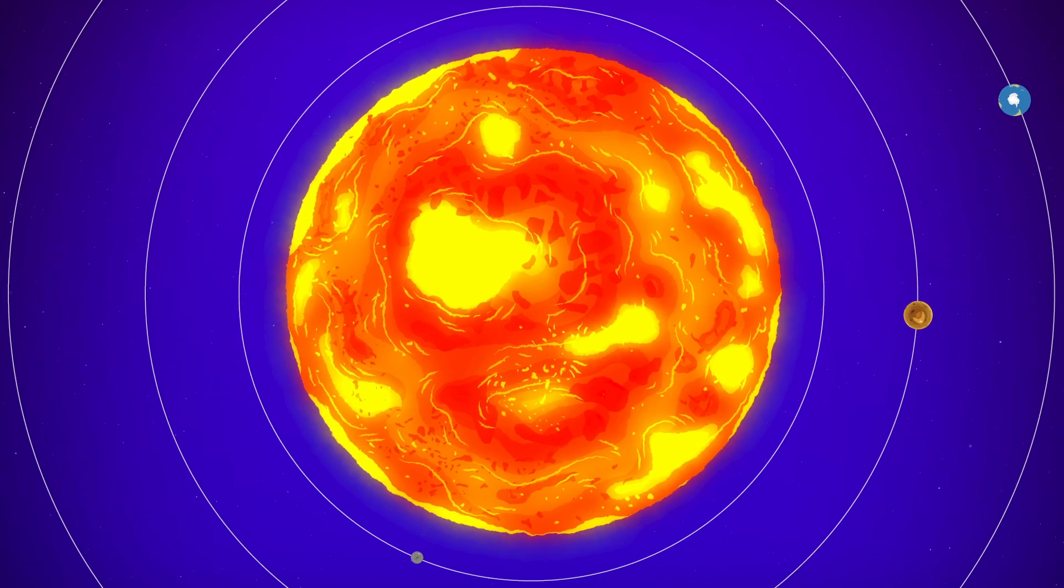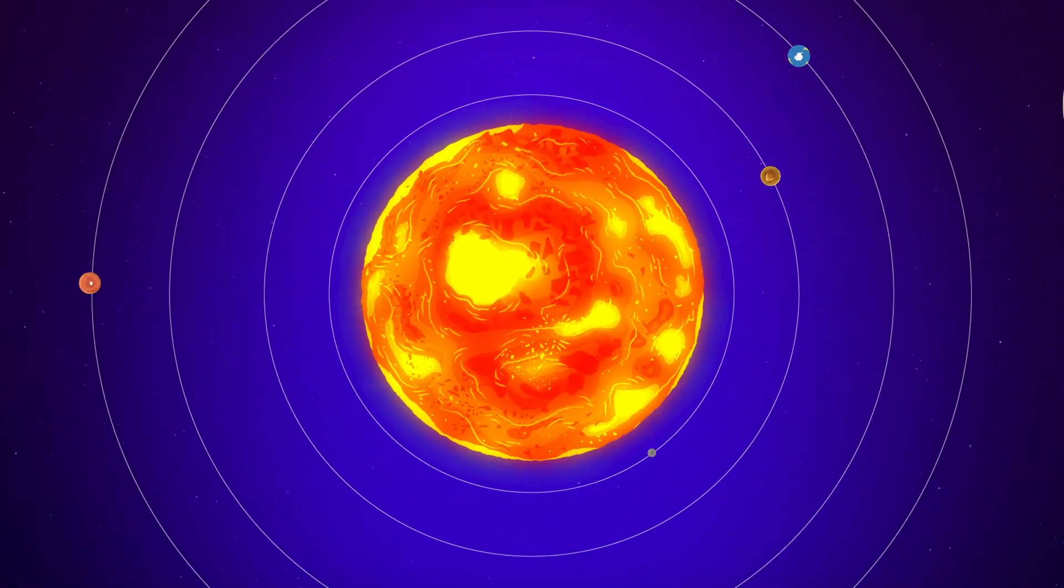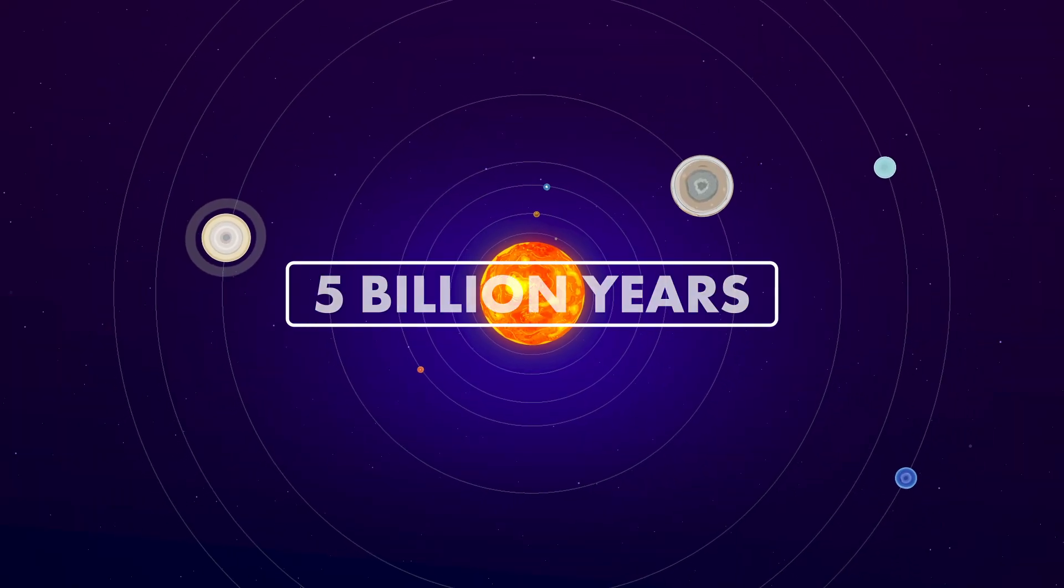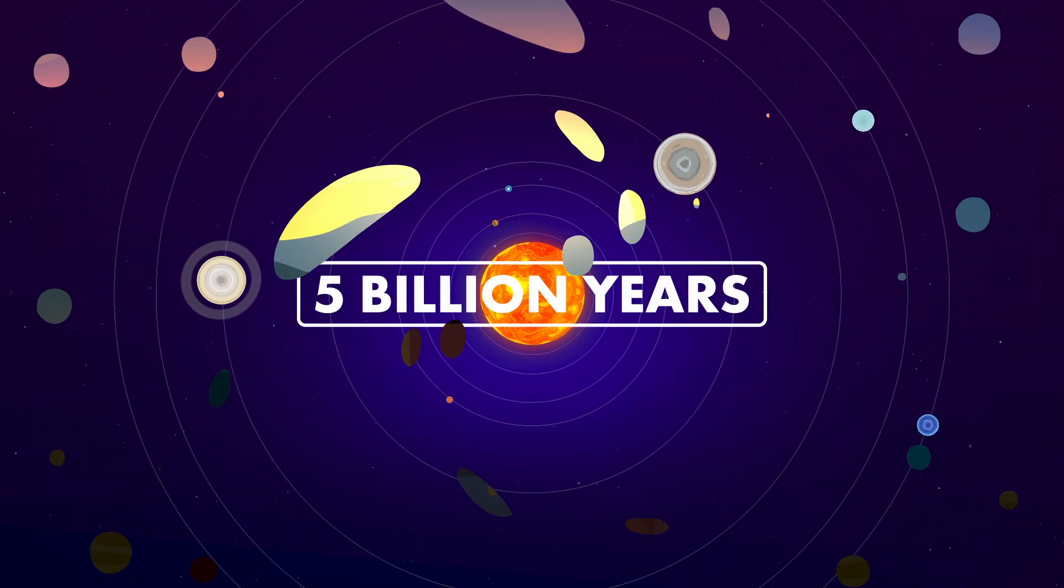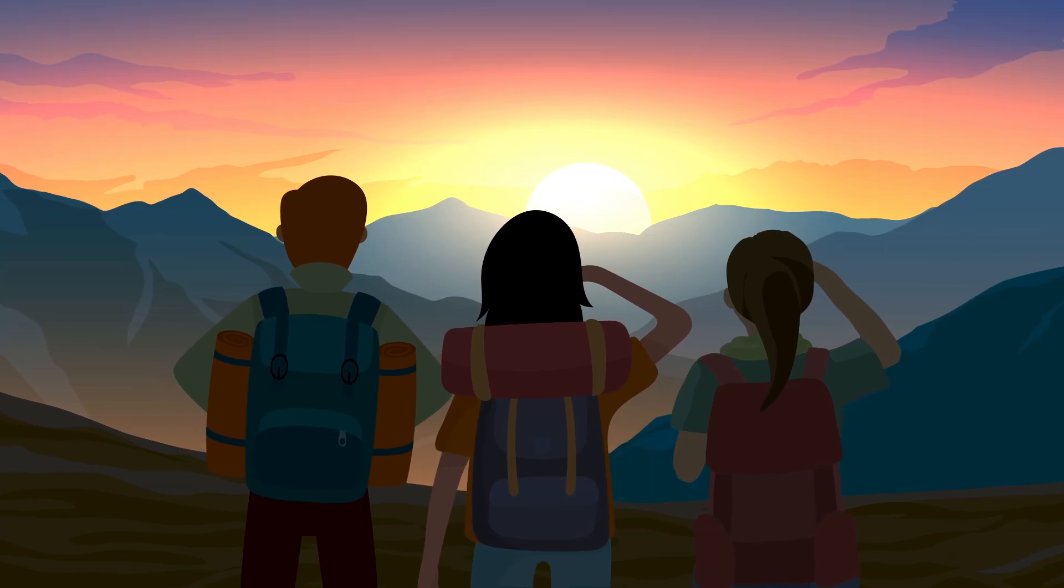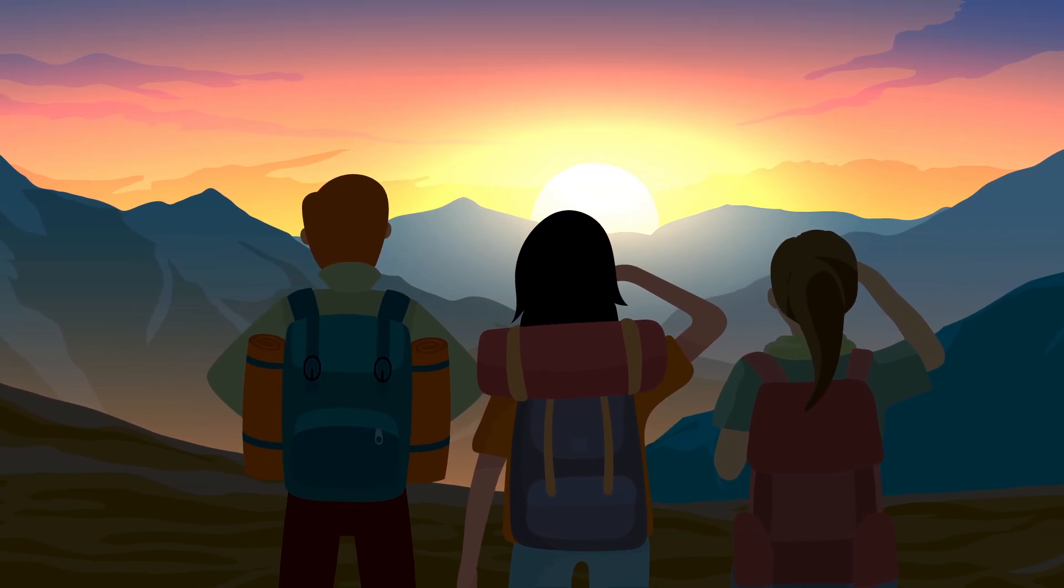Lucky for us, the sun isn't nearly massive enough to create a black hole, nor is it going to die any time soon, not for at least another 5 billion years. While its vanishing is a scary thought, there's no need to worry. Our sun will keep shining for a long time to come.